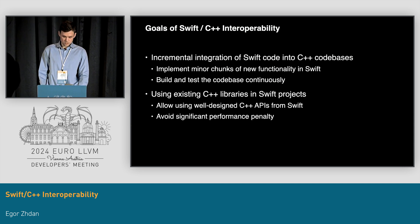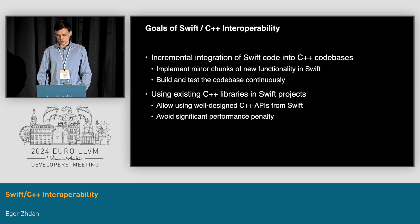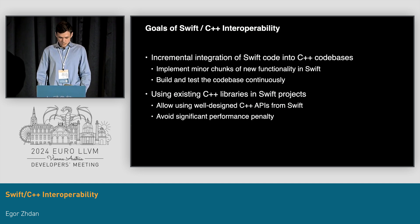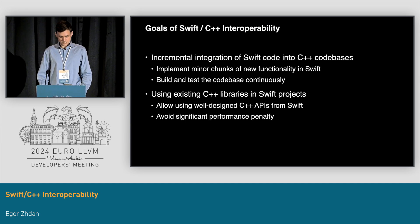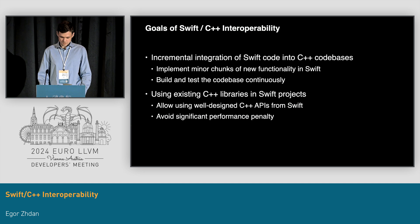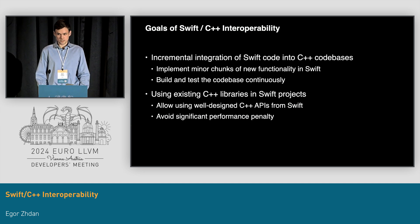We would also like to allow developers writing Swift code in Swift-only projects to use C++ libraries from their Swift source code. This would be super useful, for instance, for macOS and iOS apps that use scientific libraries written in C++. For some of those use cases, it is important to avoid significant performance overhead.